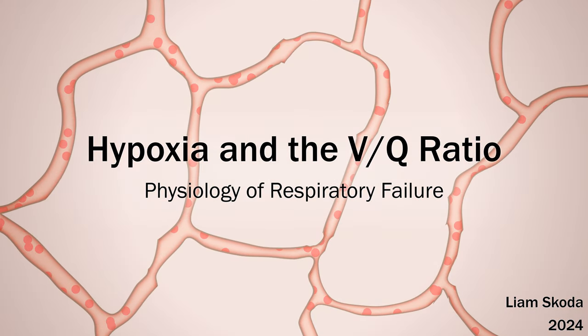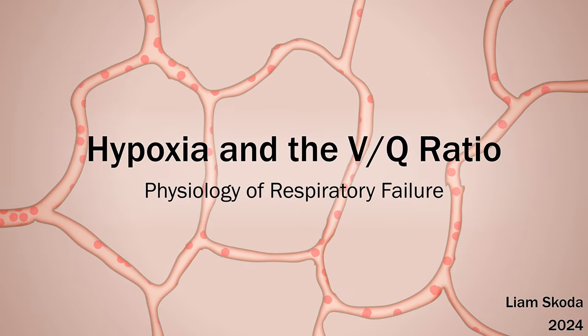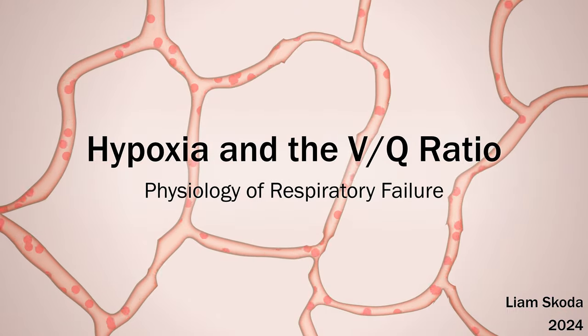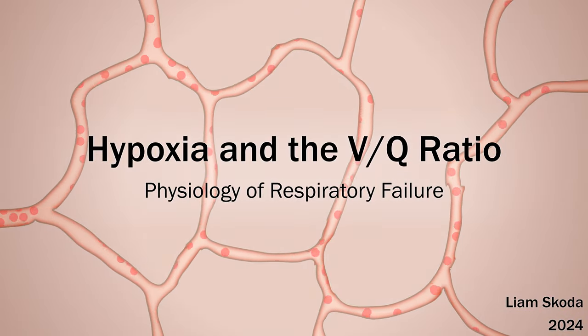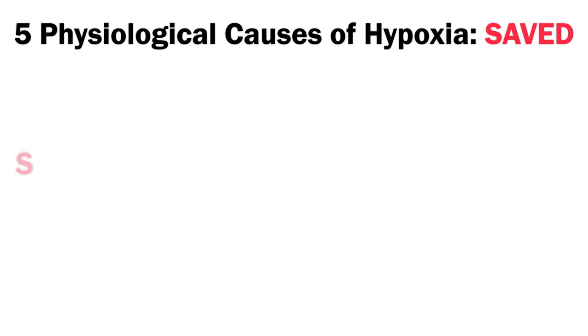Hello everyone. In this video I'm going to outline the physiological causes of hypoxia and discuss the significance of the ventilation-perfusion ratio. According to the legendary respiratory physiologist John West, there are five physiological reasons for someone to develop hypoxemia or a state of low partial pressure of oxygen in the systemic arterial blood.